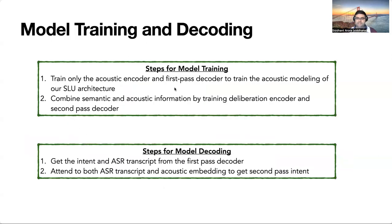Similar to prior work on two-pass ASR systems, we use a two-step training process. In the first step, we train only the acoustic encoder and first-pass decoder for acoustic modeling. In the second step, the model learns to combine semantic and acoustic information by training the derivation encoder and second-pass decoder. We do not use teacher forcing during the second phase and the model is trained using the ASR transcripts. Our decoding also consists of two phases: first, we get the intent and ASR transcript from the first-pass decoder, and second, we attend to both the ASR transcript and acoustic embeddings to get the second-pass intent. This two-phase inference step can reduce our system's overall latency.